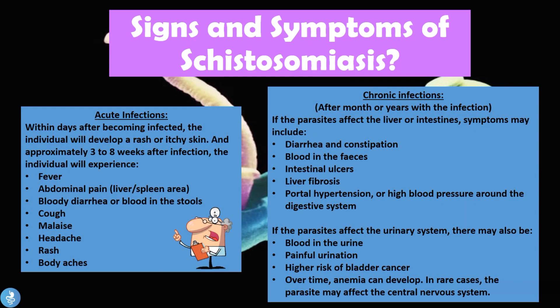Now let's talk about the signs and symptoms of Schistosomiasis. The disease has both an acute and a chronic infection stage. In the acute stage, within days of infection the individual may develop a rash or itchy skin. Approximately three to eight weeks after infection, symptoms include fever, abdominal pain especially around the liver and spleen, bloody diarrhea or blood in the stools, cough, malaise, headache, rash, and body aches. These symptoms arise due to the infiltration of worms and larvae into the different organ systems.